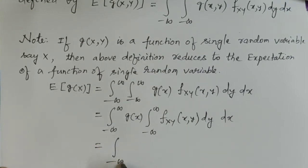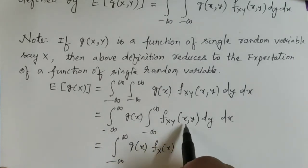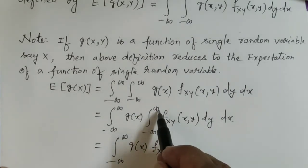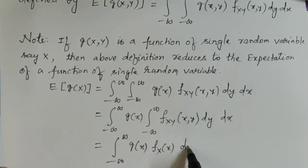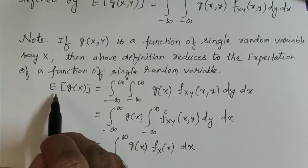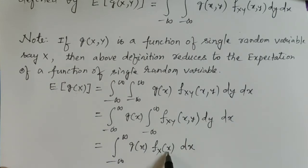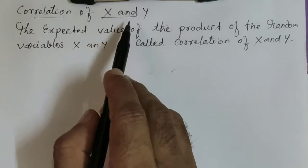So this reduces to the integral from minus infinity to plus infinity of g(x) times f_X(x) dx, where f_X(x) is the marginal density function of the random variable x, defined as f_X(x) = integral of f_{XY}(x, y) dy. This is the expected value of a function of a single random variable, with f_X(x) as its probability density function.